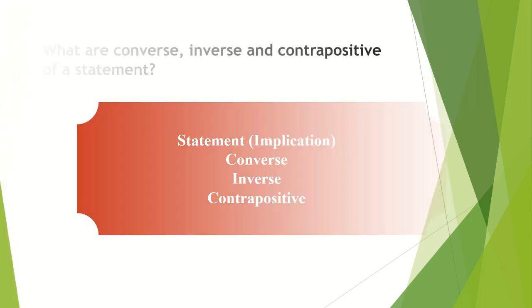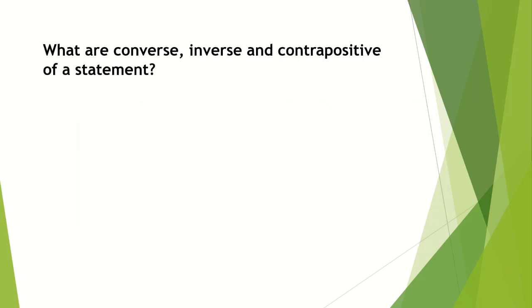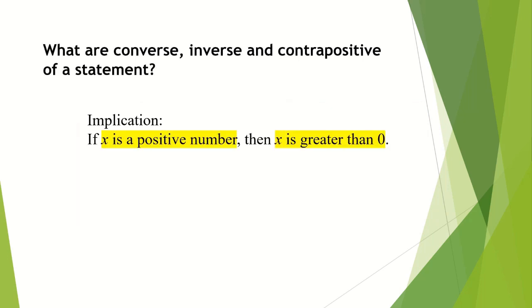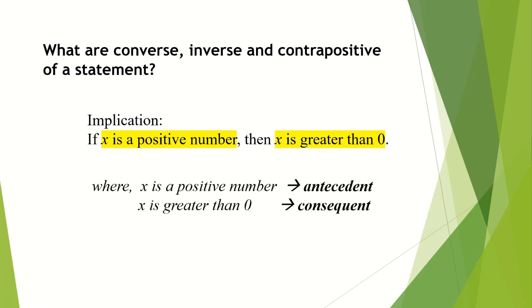What exactly are converse, inverse, and contrapositive of a statement? Let's take a look at the implication given here: if x is a positive number, then x is greater than zero. Where in this case, 'x is a positive number' is known as the antecedent, and 'x is greater than zero' is known as the consequent.